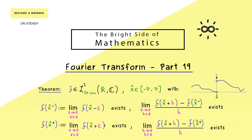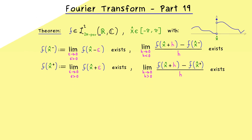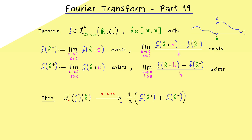This is all we need to say something about the pointwise convergence of the Fourier series at the point x̂. The Fourier series is called f_n(f) and at the point x̂ we send n to infinity. What we get is exactly the midpoint between the two values we get at the jump point x̂. In the picture above this would be exactly that point. To make our notation simpler, let's call this midpoint capital M. This is our theorem and now we want to prove it.